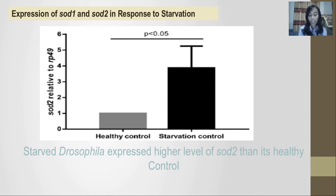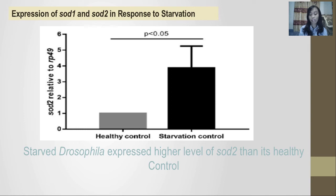Starved Drosophila expressed higher levels of SOD2 than its healthy counterpart. This may be caused by the existence of an autophagy process that can increase energy production in the mitochondria. Nevertheless, increased expression of SOD2 upon starvation induction would be a beneficial response to the host, because SOD2 has been shown to be important to counteract the free radicals that first form in the mitochondria.